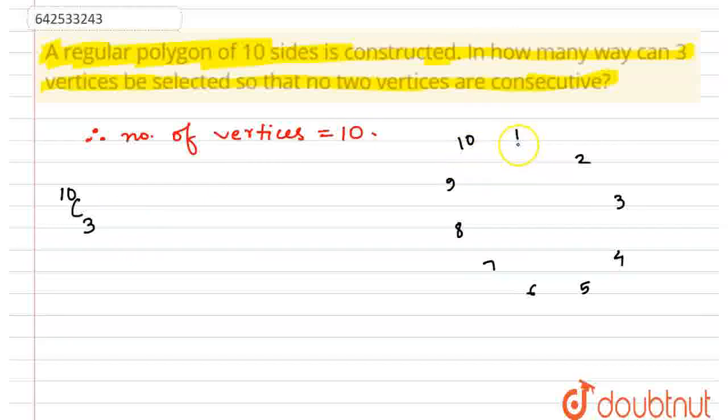How many can there be? Starting from 1, there is 1, 2, 3, then 2, 3, 4, and so on up till 8, 9, 10, then 9, 10, 1, and 10, 1, 2. So there are basically 10 choices.